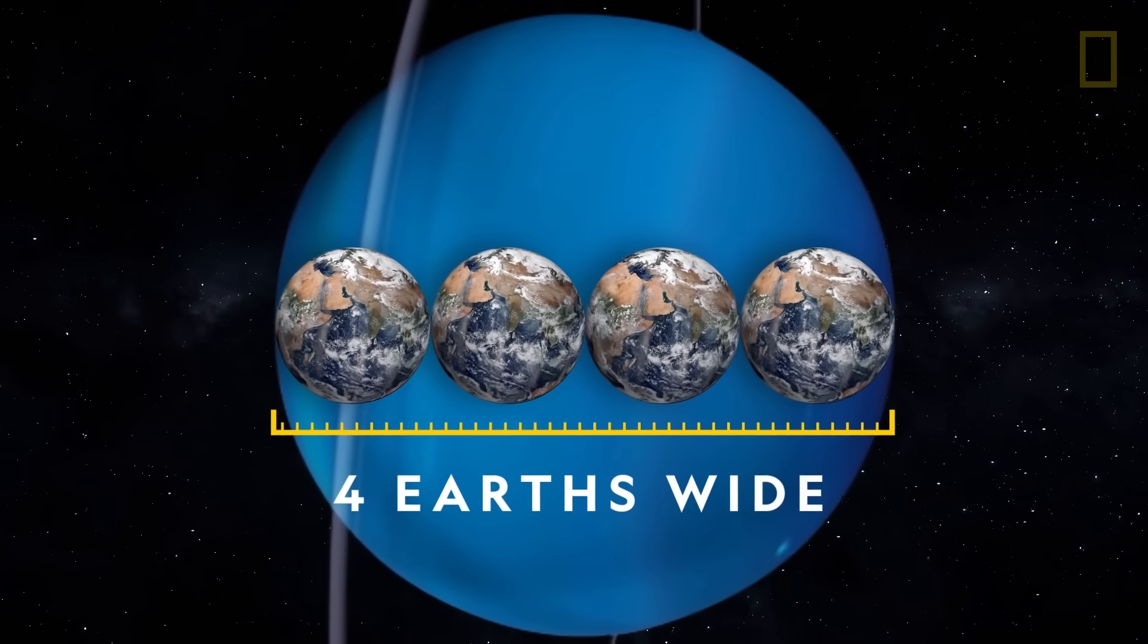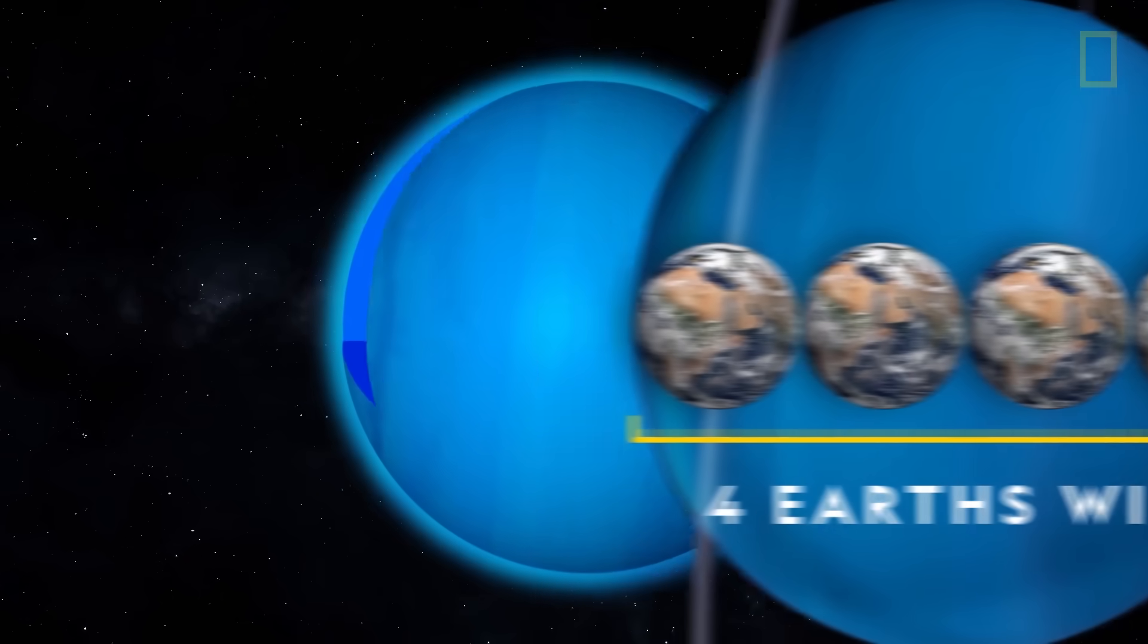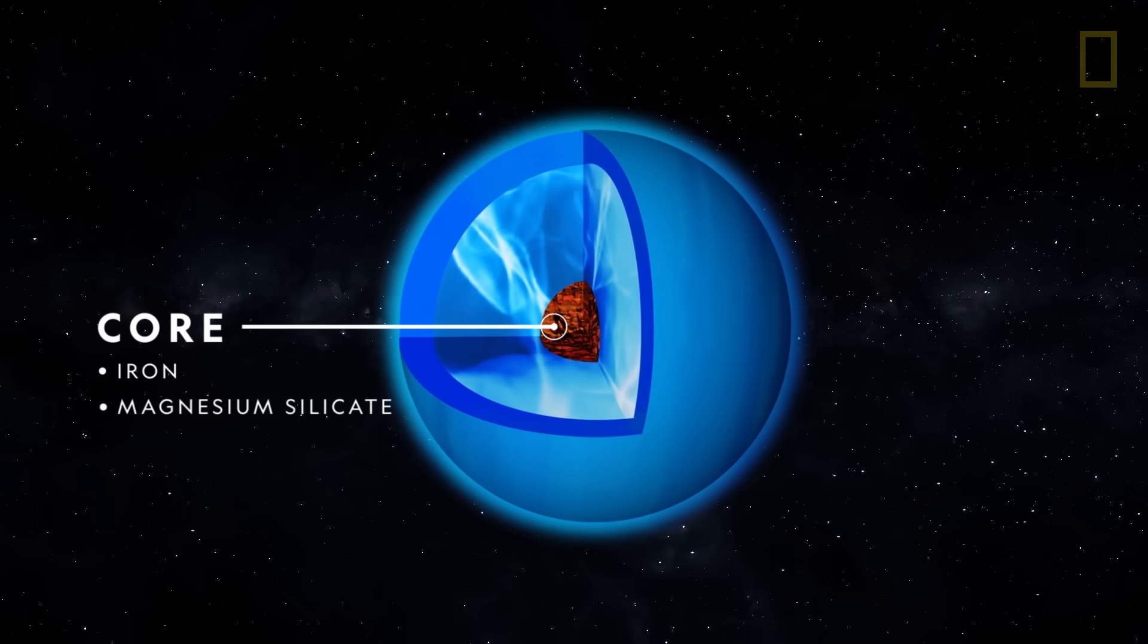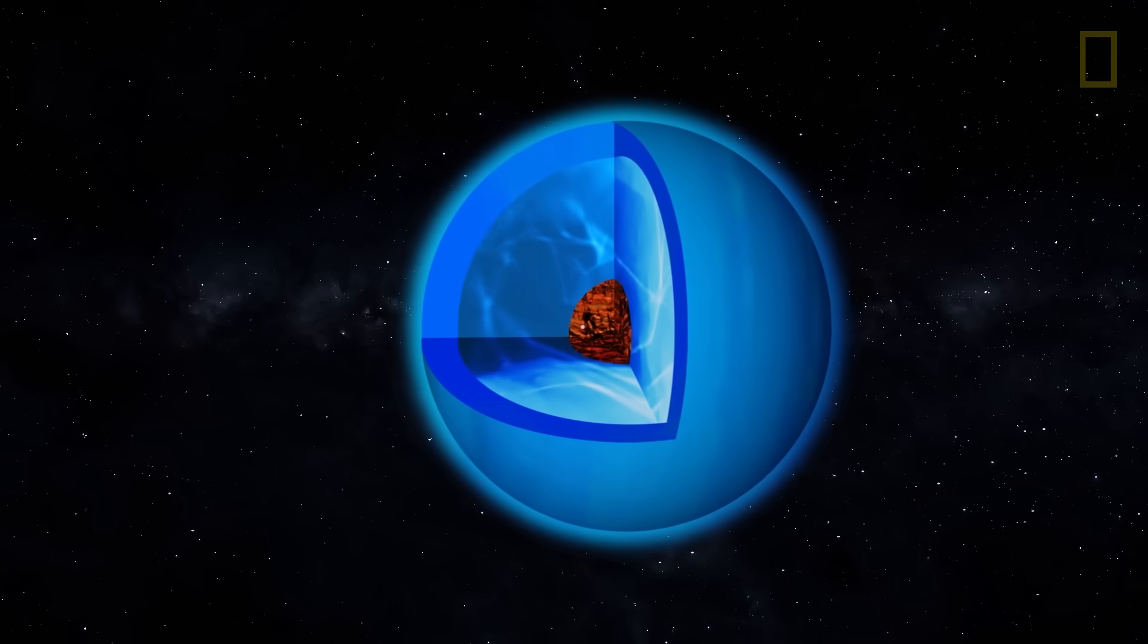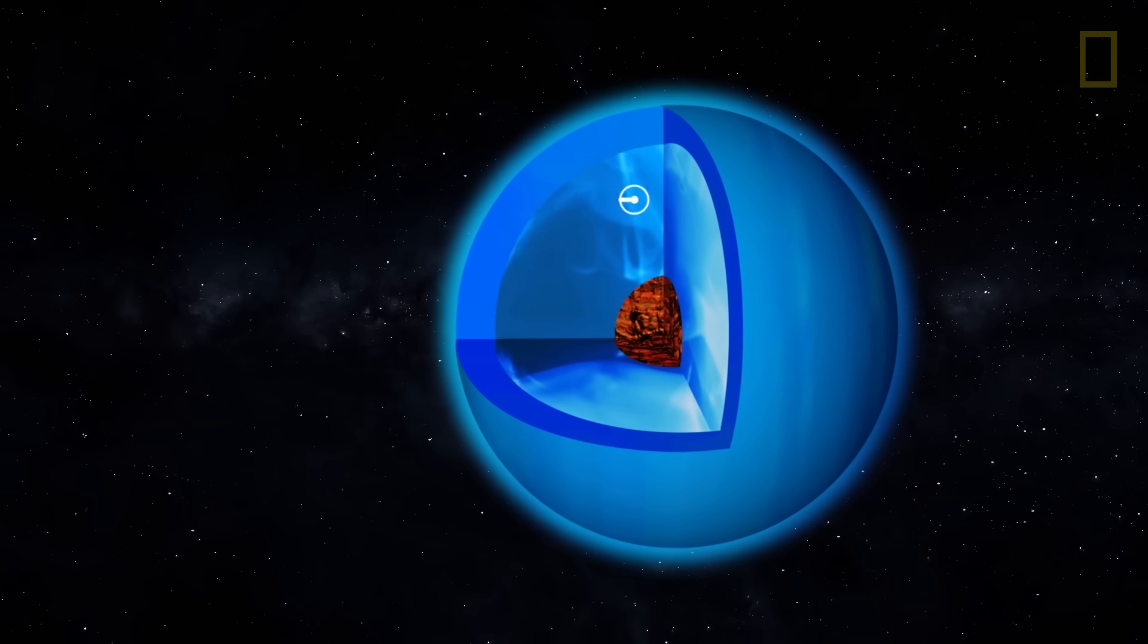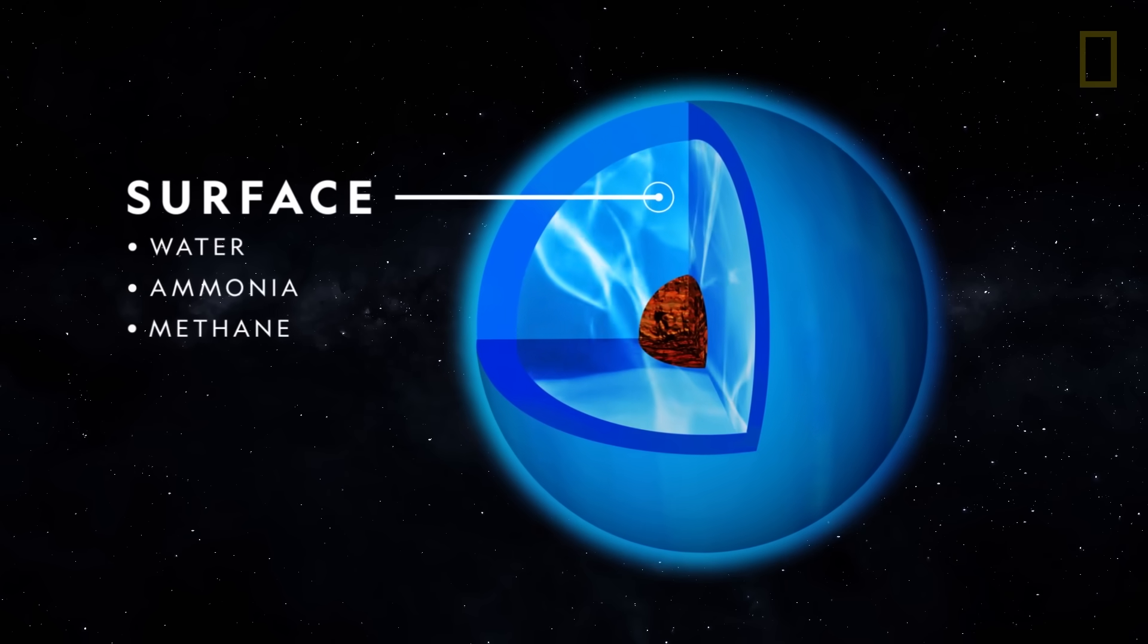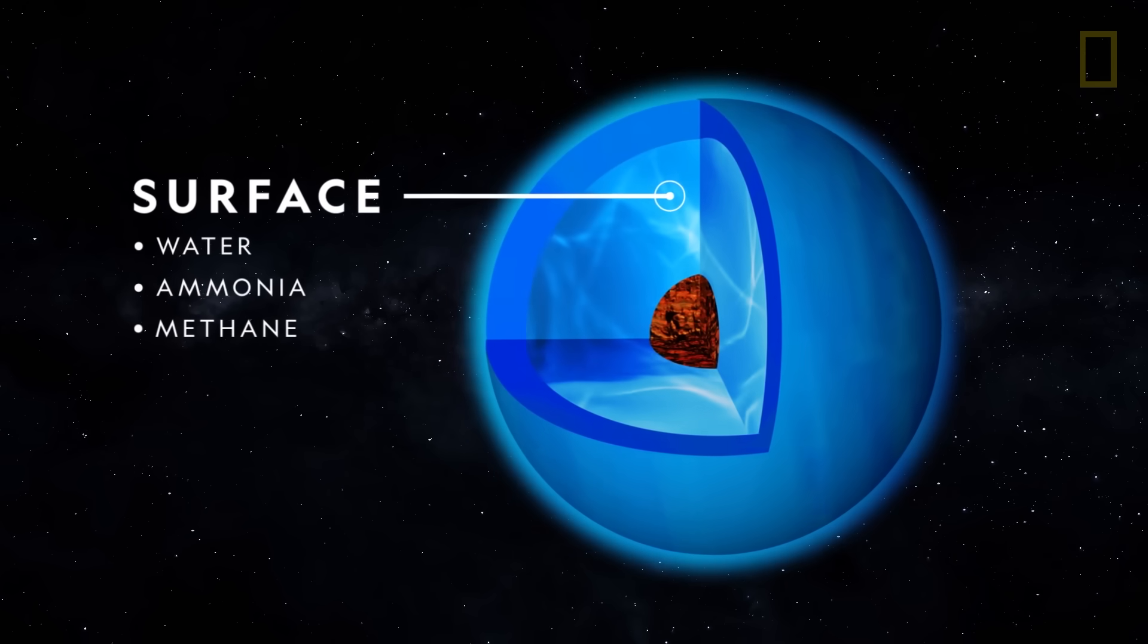At about four Earths wide, Uranus has an Earth-sized core made of iron and magnesium silicate. The remainder, approximately 80% of Uranus, is a worldwide ocean of ices made of water, ammonia, and methane, the chemical behind the planet's cool blue color.